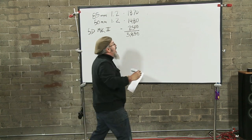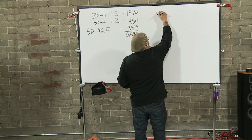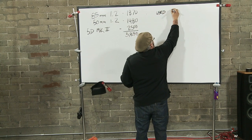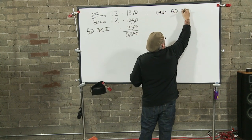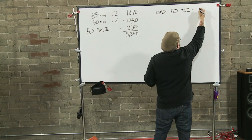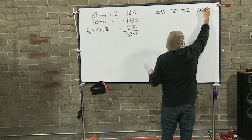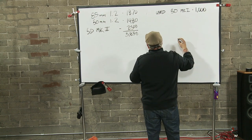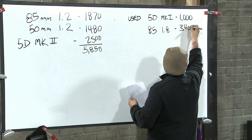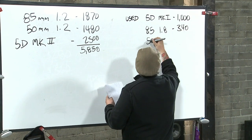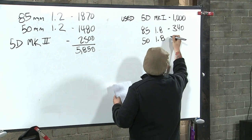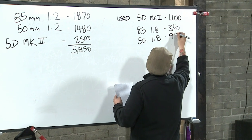If I had to start from scratch today, I would buy a used 5D Mark 1, the first one. I've seen them for a little less than $1,000, a little more than $1,000, let's just call it $1,000. I would buy an 85 millimeter 1.8 and I could pick up one of those for $340. I would buy a 50 millimeter 1.8 and I would get one of those used for $90.